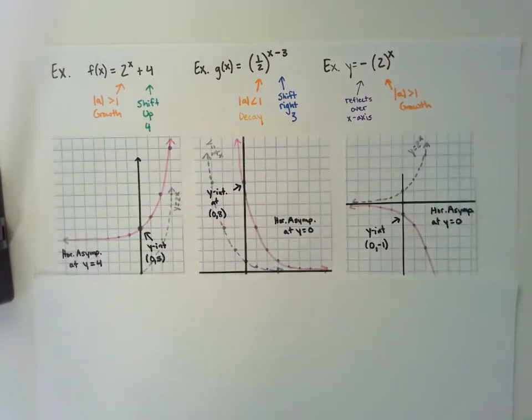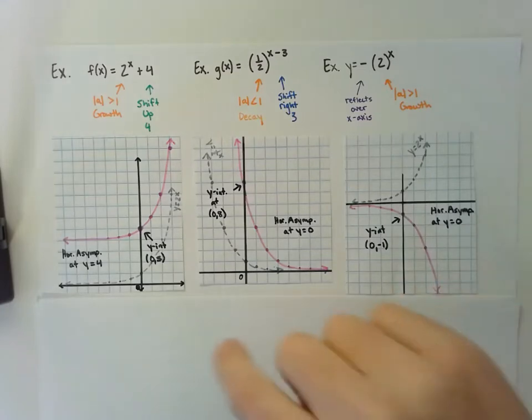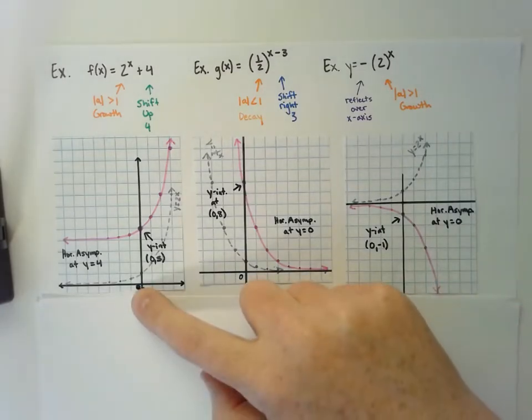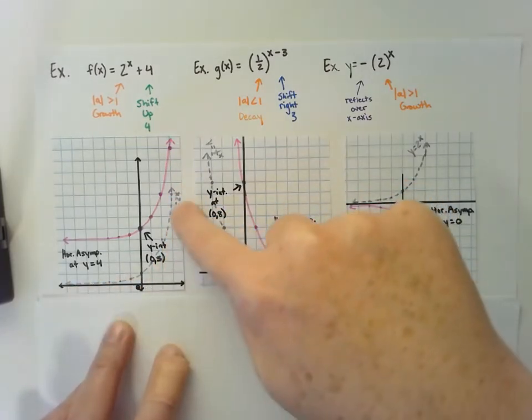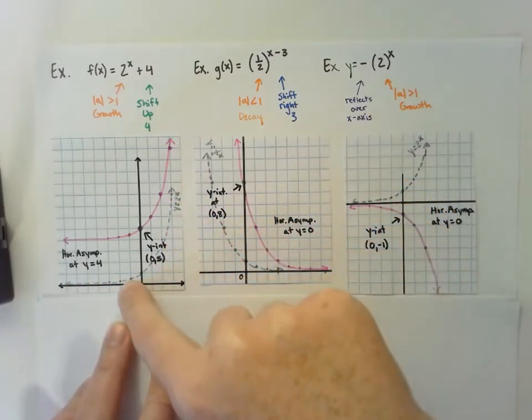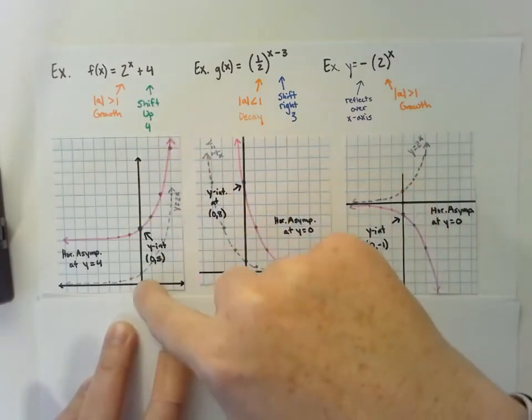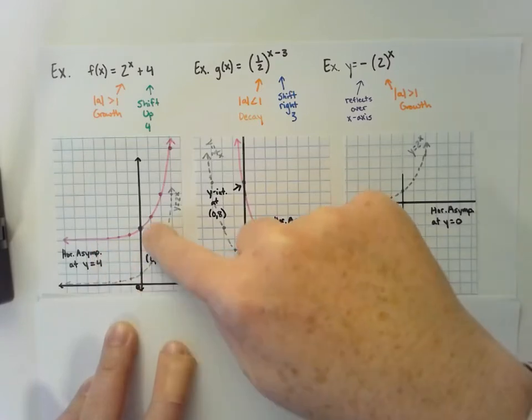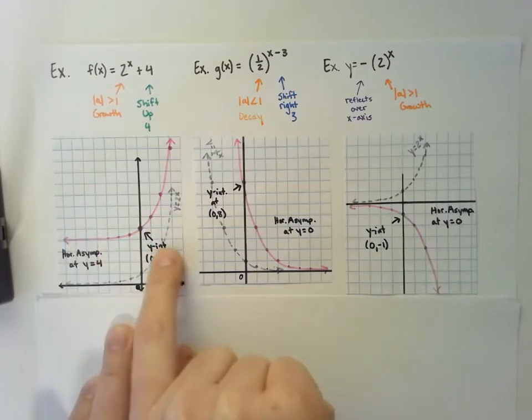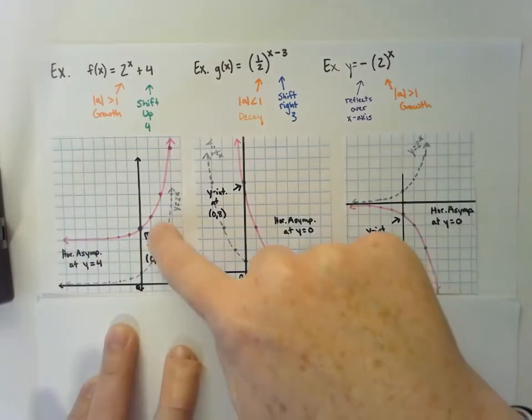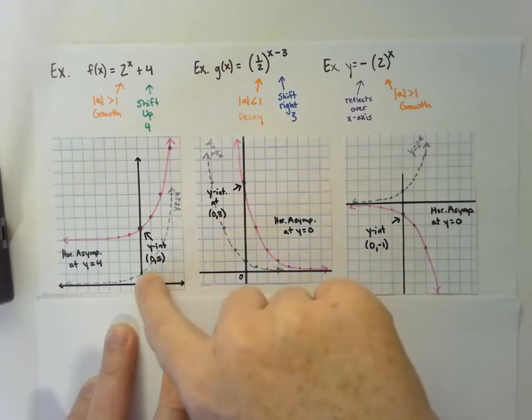I also drew out some graphs so you could tell what they look like from the parent function. In gray, I have graphed the parent function y = 2^x, which is our basic growth function. But then this one shifts up 4. Notice the whole graph just shifts up 4 units. Now my horizontal asymptote would be at y = 4—that's the imaginary line it can't cross over. The y-intercept moved up 4 units as well, so now it's at (0,5).